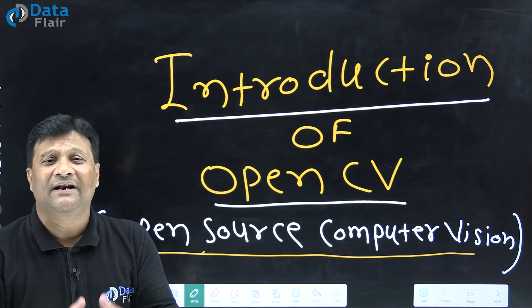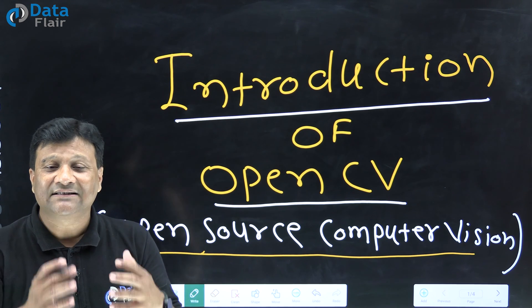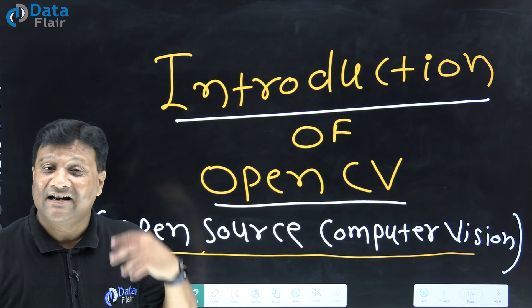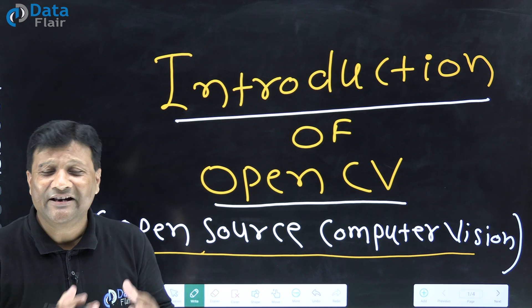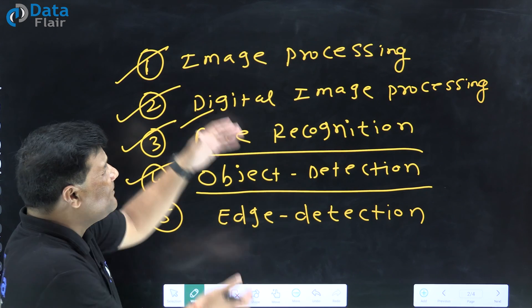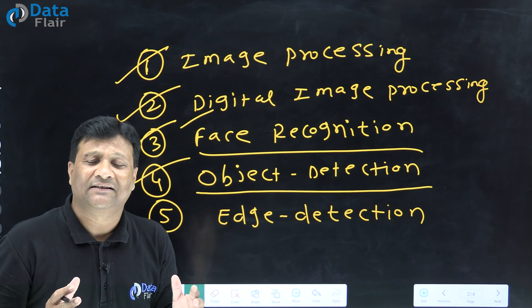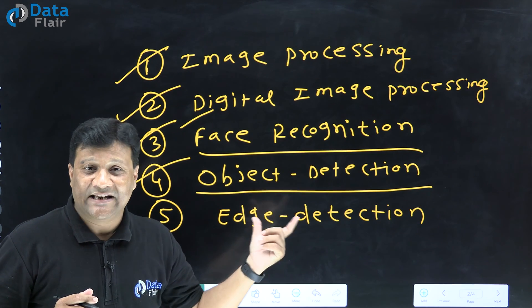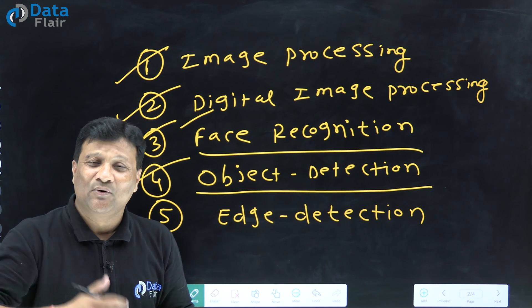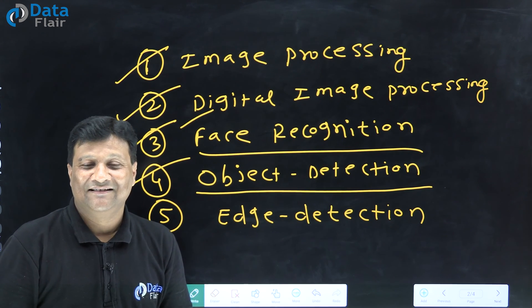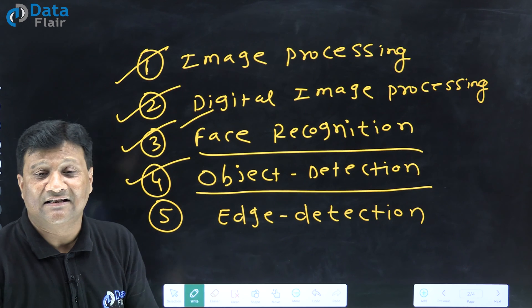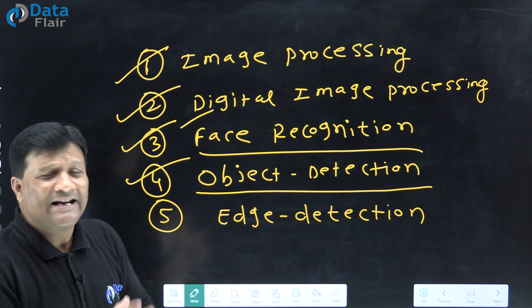So in this way we are going to use OpenCV library for applications like face detection, object detection, age detection, and gender detection. We discussed the areas where OpenCV library is used — not only a few areas like video and image processing, but there are a lot of applications we are going to design using OpenCV. Using OpenCV, we can go for face recognition, object detection system, age detection system, and digital image processing.